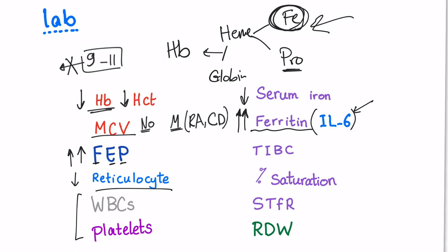TIBC is always opposite to ferritin. So ferritin up, TIBC down. Percent saturation equals the serum iron over the TIBC. So serum iron is low, TIBC is low. That's why percent saturation can be normal. But if the problem in iron is more, which is usually the case, then we'll have decreased percent saturation.